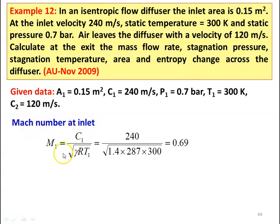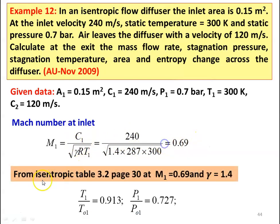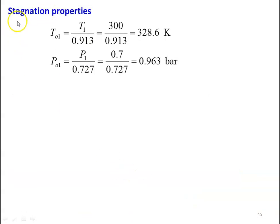Mach number at the inlet: M1 equal to C1 divided by square root of gamma R T1, which is 240 divided by square root of 1.4 into 287 into 300, equal to 0.69. From isentropic table 3.2 at M1 equal to 0.69 and gamma equal to 1.4, we take T1/T01 equal to 0.913 and P1/P01 equal to 0.727. Stagnation properties: T01 equal to 300 divided by 0.913, equal to 328.6 Kelvin. P01 equal to 0.7 divided by 0.727, equal to 0.963 bar.